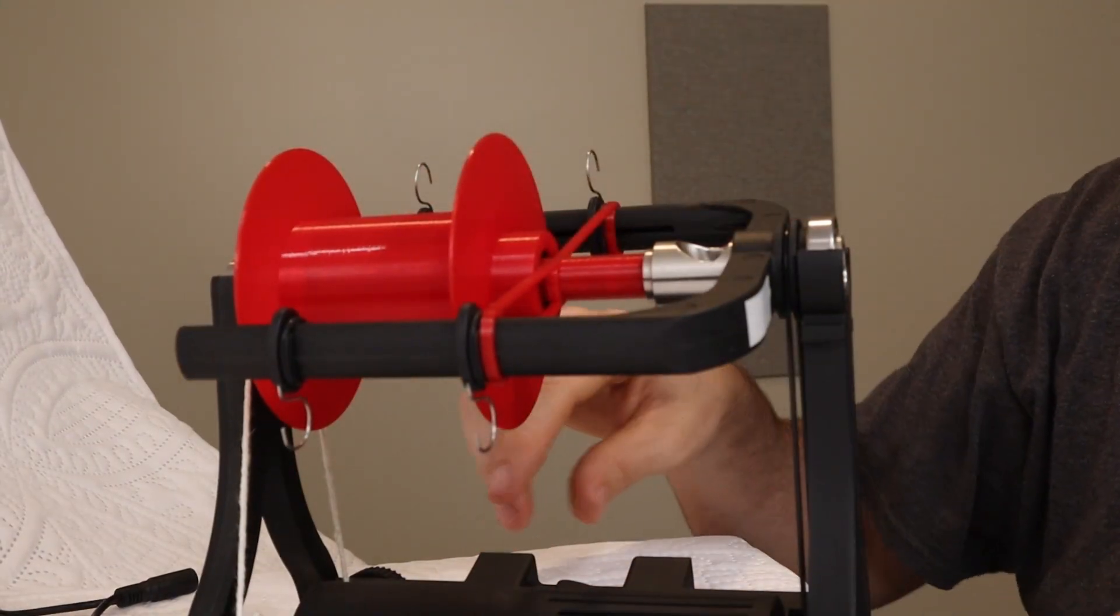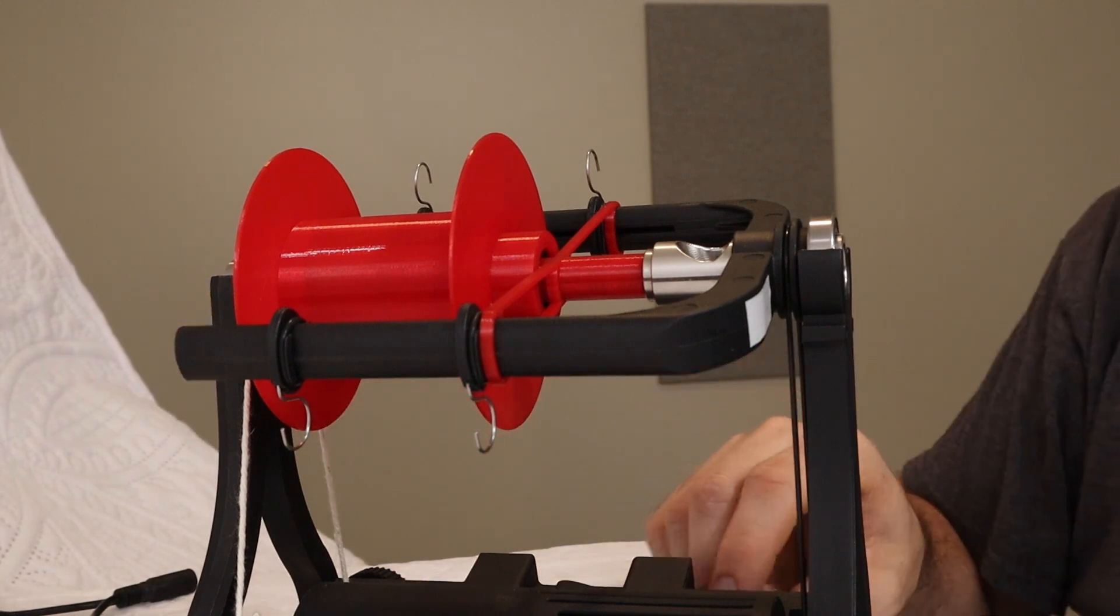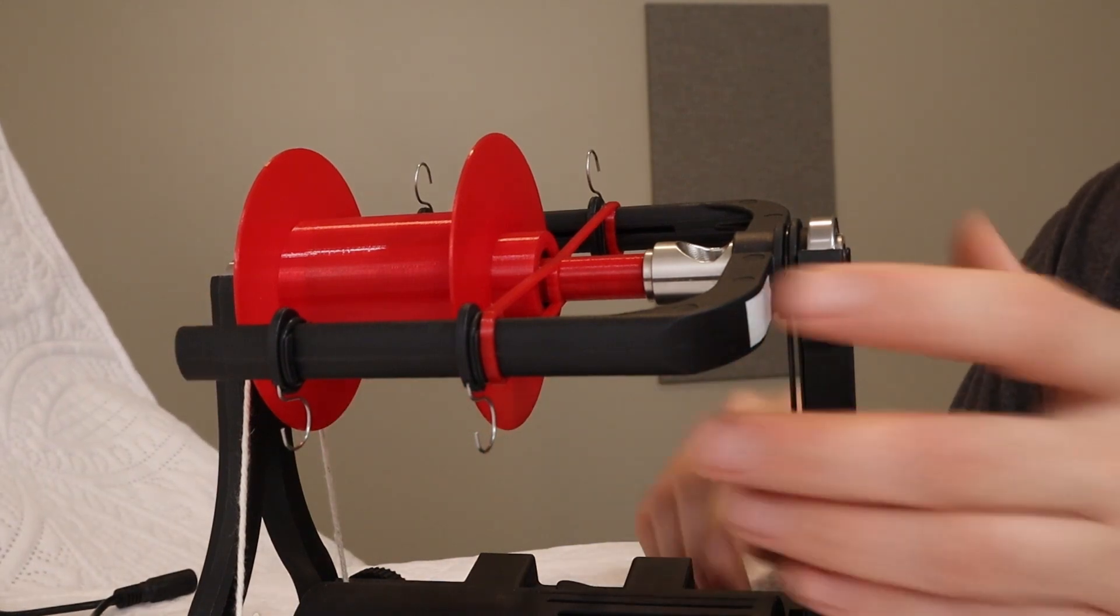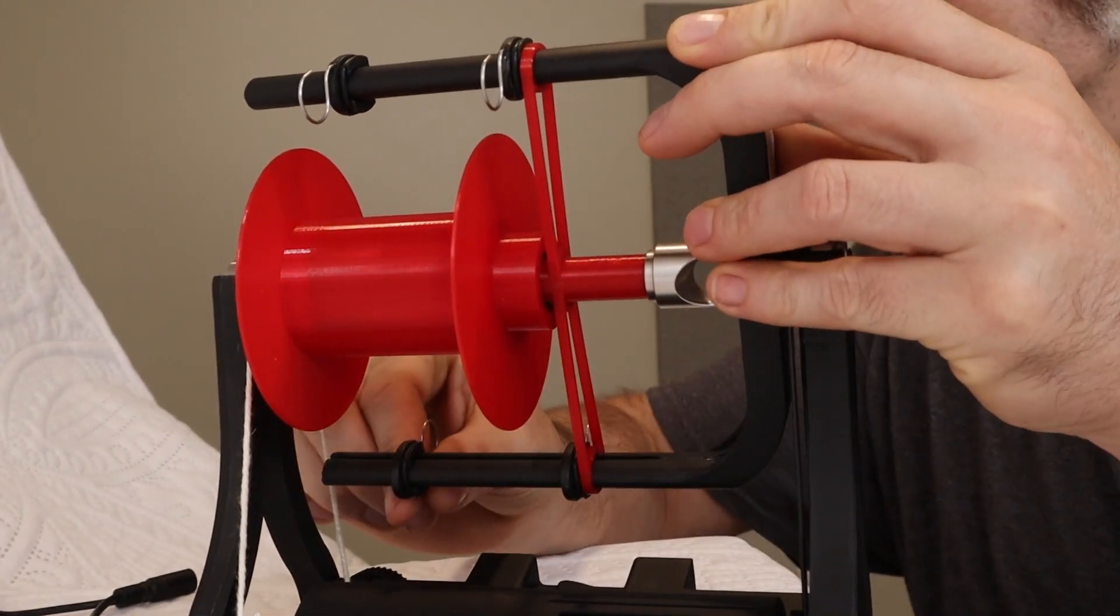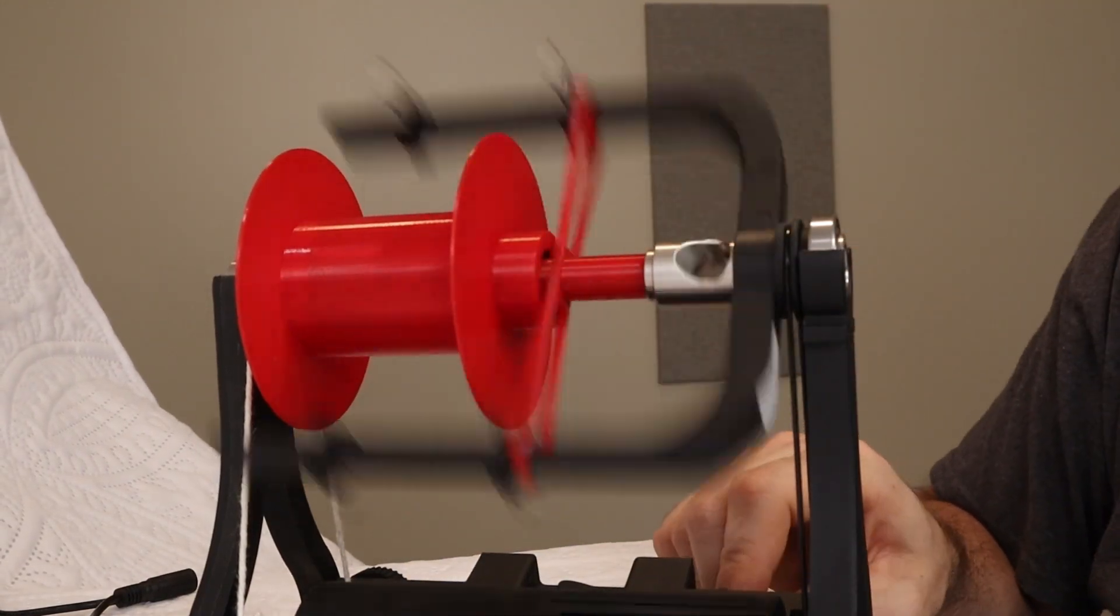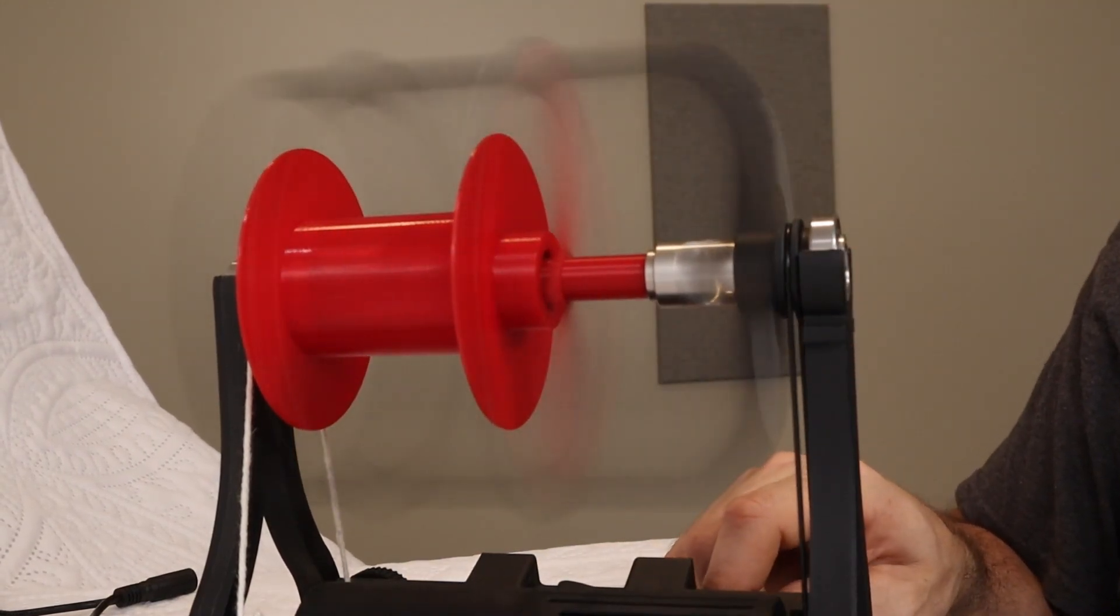But you can spin with or without them. It's sort of up to you. And that's all there is to it. So make sure the hooks are pretty close to directly across from each other. And then it just works like the regular spinning wheel.